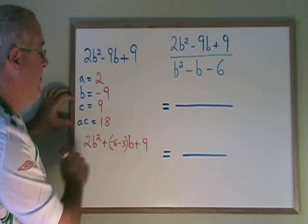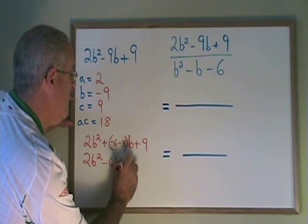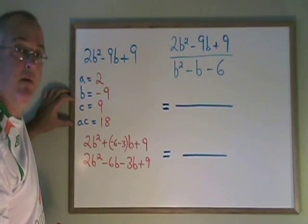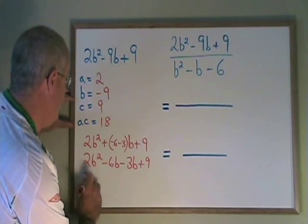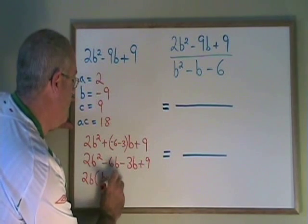This now can be broken down into 2b squared minus 6b minus 3b plus 9. The common factor of the first two terms is 2b, and that factored out gives me b minus 3.